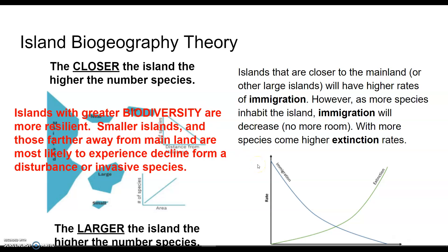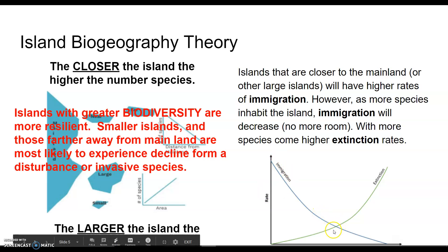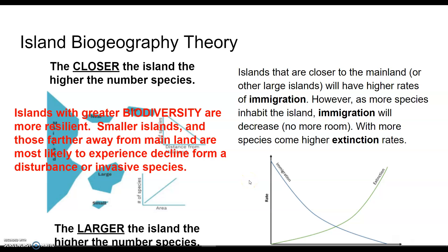As more organisms immigrate to an island, immigration numbers will go down as resources and space run out and competition increases, and you'll see an increase in extinction. When the immigration and extinction lines intersect, that's when we have reached equilibrium.